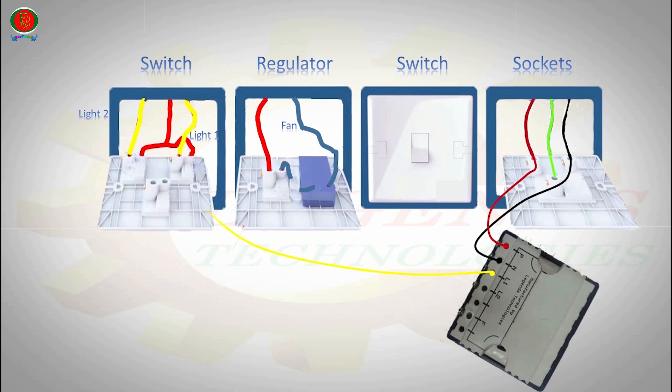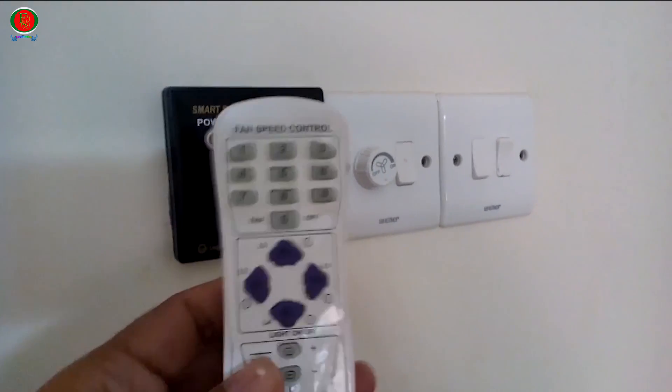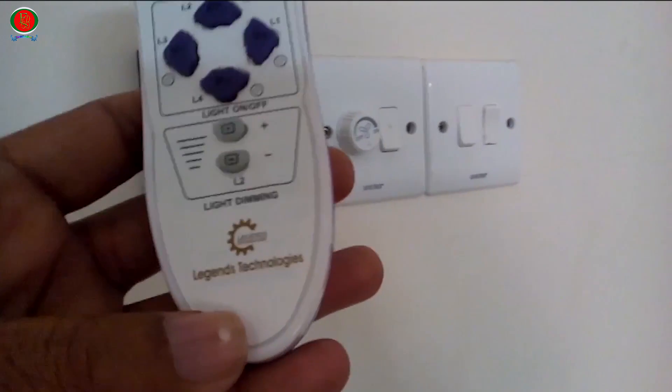Remote control circuit output light 1 positive connection, remote control circuit output line 2 positive connection, remote control circuit output line fan positive connection. Switch remote board show box, remote control device working test.